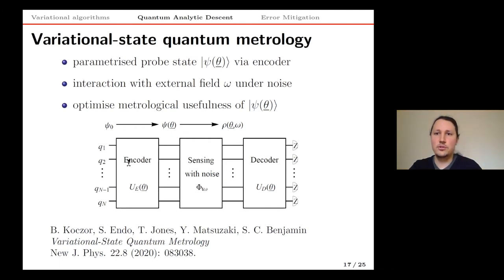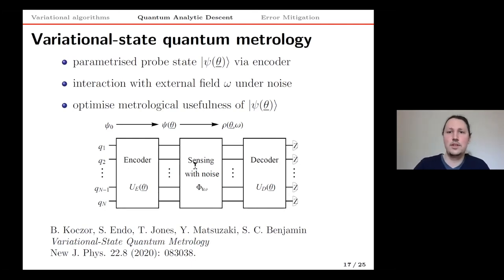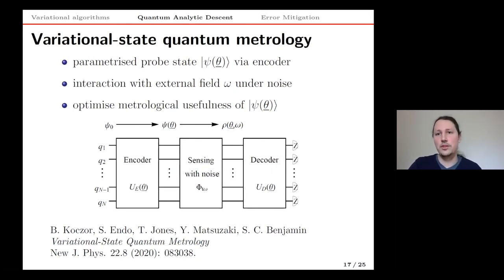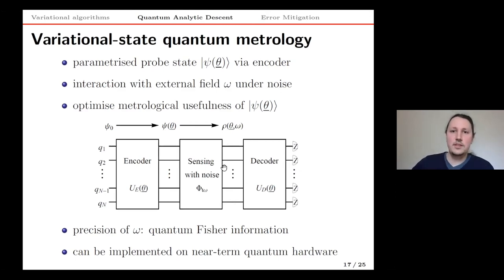Our idea was to use a quantum computer to find optimal probe states. We use shallow parametrized quantum circuits to encode the sensing probe state, simulate how it evolves under the noisy sensing period — the interaction with the Hamiltonian — then use another shallow parametrized circuit to decode information and measure in the standard basis. At the end we evaluate the precision via the quantum Fisher information. Some groups have already confirmed our findings on IBM quantum devices.